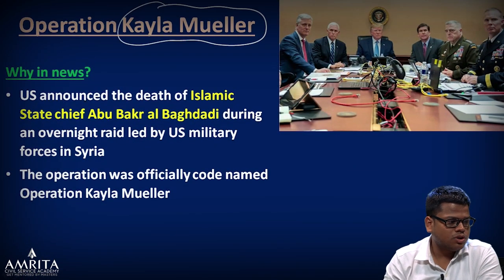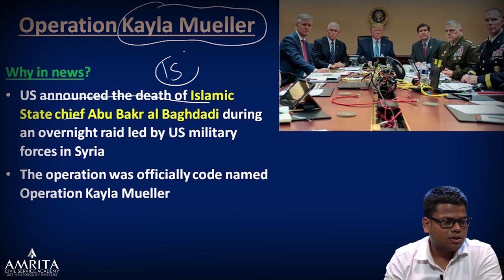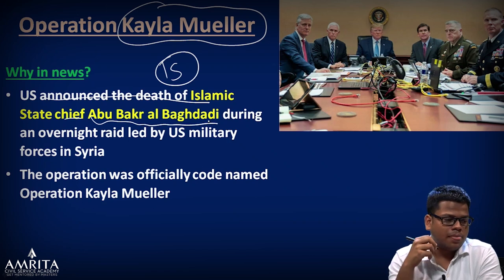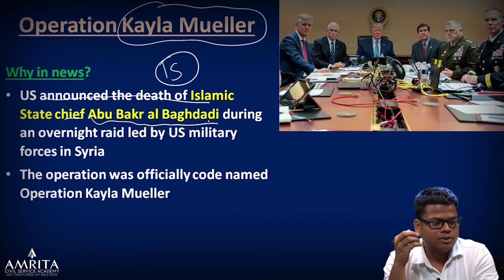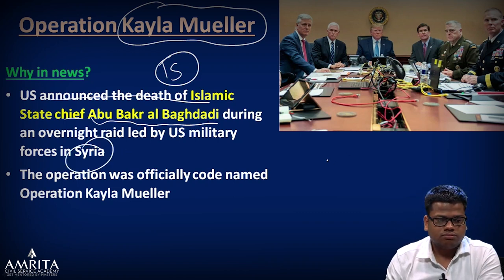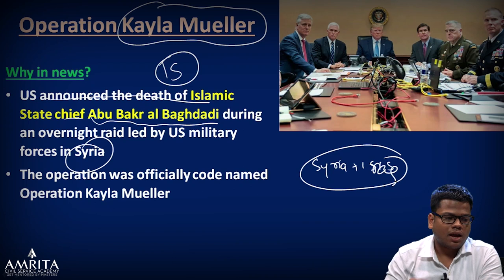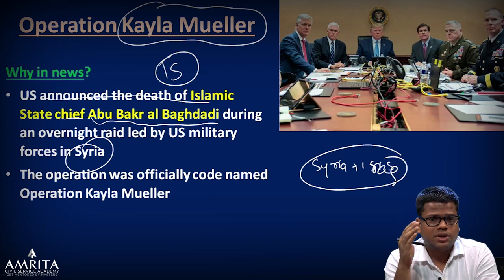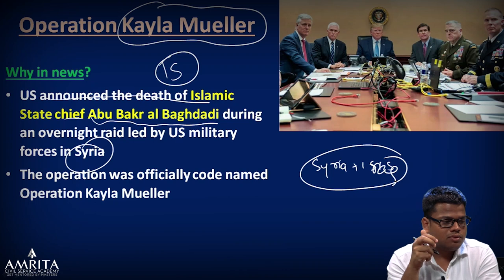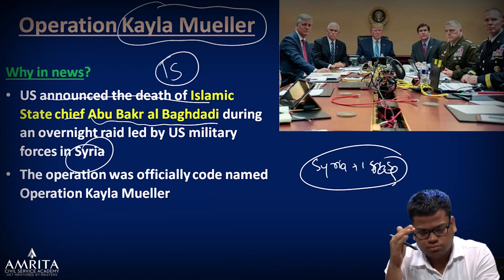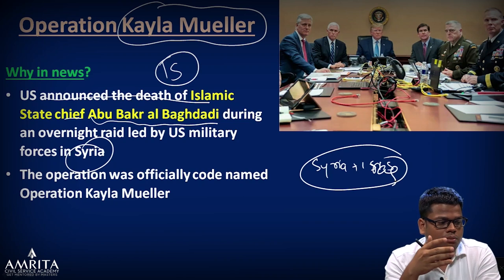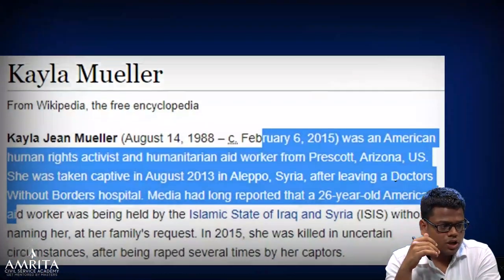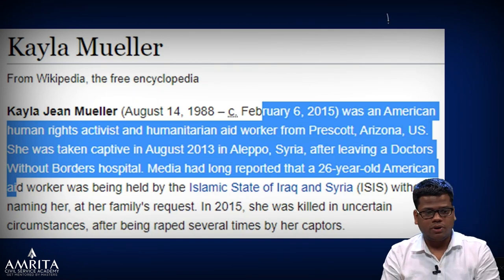The US announced the death of the Islamic State's self-proclaimed chief Abu Bakr al-Baghdadi. He was killed in an overnight raid by US military forces in Syria. Syria and Iraq were the cradle of ISIS. The official code name for the operation — which is what needs to be remembered — is Operation Kayla Muller. Kayla Muller was an American human rights activist.